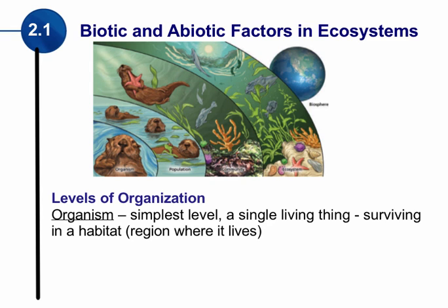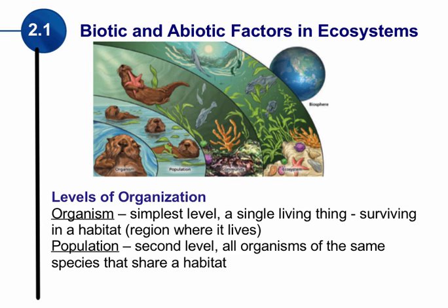In this picture, our organism is just our sea otter. It is a single living thing surviving in the region it lives — in this case, the ocean. Just one particular sea otter. Now we might be concerned about that particular organism, but we may want to look at other organisms and combine them together. This is what we then consider a population.